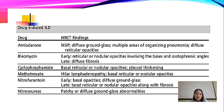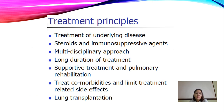Drug-induced interstitial lung diseases can be caused by amiodarone, bleomycin, cyclophosphamide, methotrexate, nitrofurantoin, and nitrosoureas. The main treatment principles include treatment of the underlying disease, steroids and immunosuppressive agents, a multidisciplinary approach, long duration of treatment, supportive treatment, pulmonary rehabilitation, treating comorbidities, limiting treatment-related side effects, and lung transplantation.